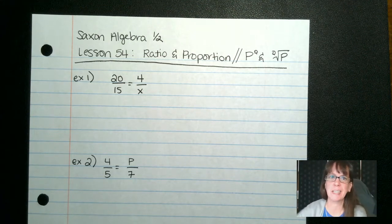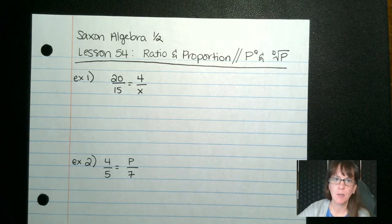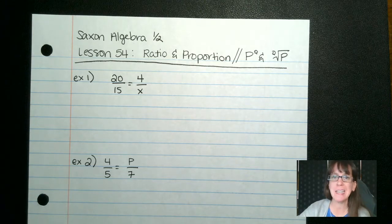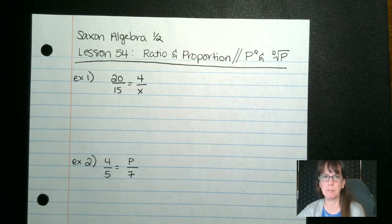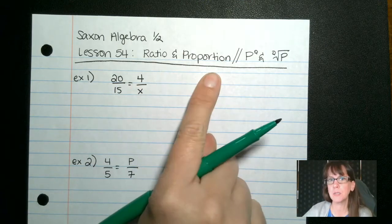Hi friends, welcome back. Today we're talking Saxon Algebra 1.5 third edition, so it's that blue book. We're talking about ratios and proportions and then p to the q power or the q root of p. First things first, this is our first example. We have ratios and proportions.